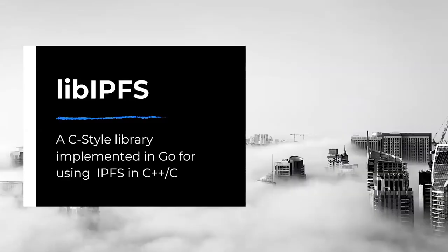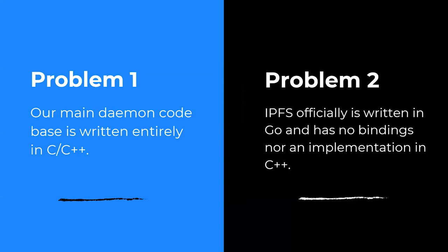Our main daemon runs on client computers and servers with exchanges, and it's built in C and C++. However, IPFS is written in Go, and at the time we started — more than a year ago — there were no implementations to use IPFS directly from C++ without a standalone IPFS instance using HTTP APIs. One advantage of Go is that you can link Go libraries into C++ code, which made it possible for us to pull IPFS into our main daemon. That's how libipfs was born.